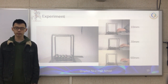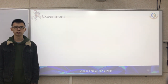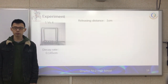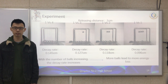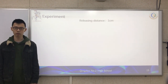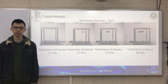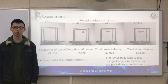We change the release distance from 10 mm to 60 mm and recorded the data. We also control the release distance to 1 cm and change the number of balls in the Newton's Cradle. We find that with the number of balls increasing, the decay rate increases, because more balls lead to more energy loss. We also found that fewer balls lead to longer periods, because fewer balls result in less energy loss per period.